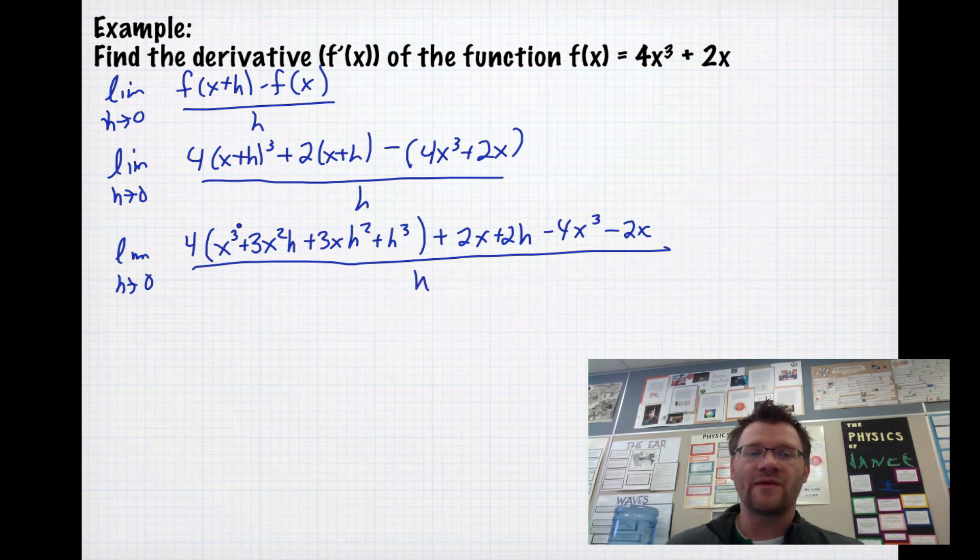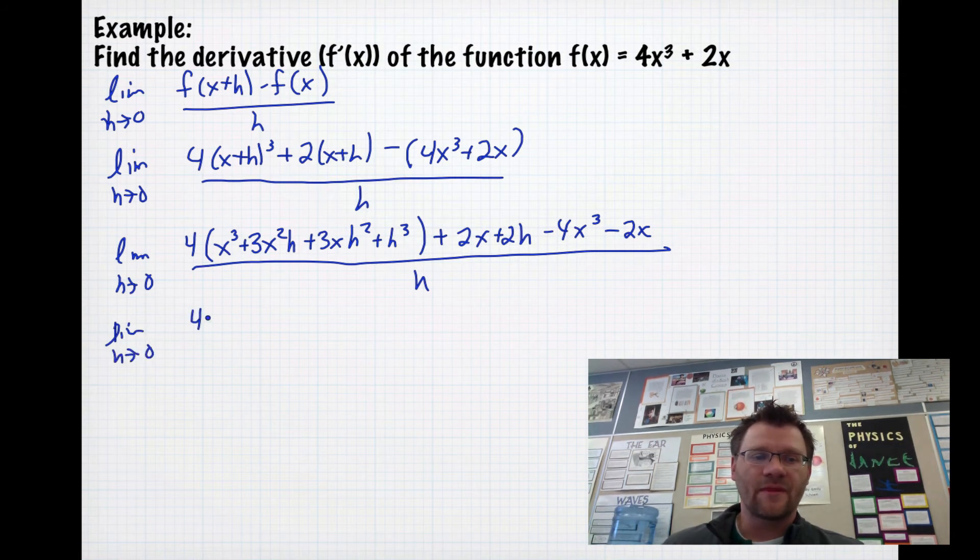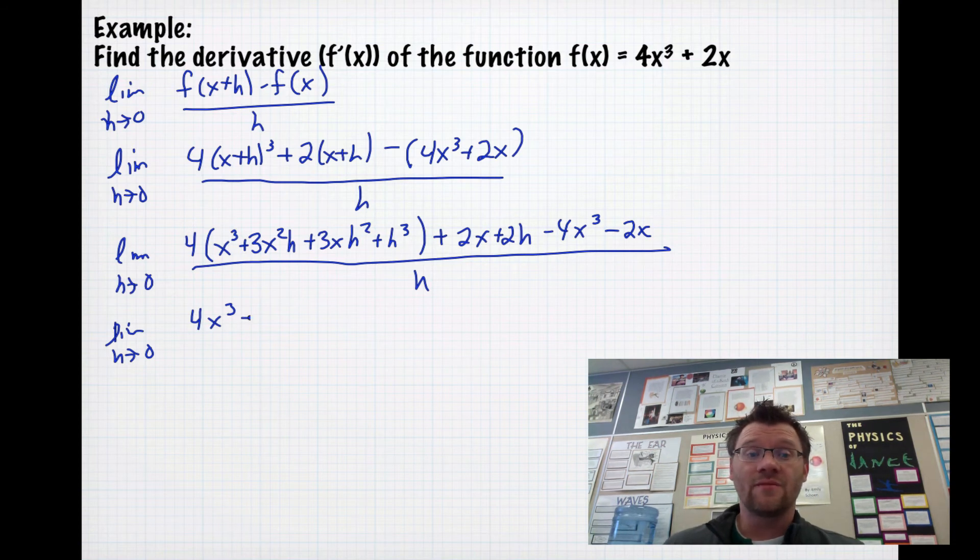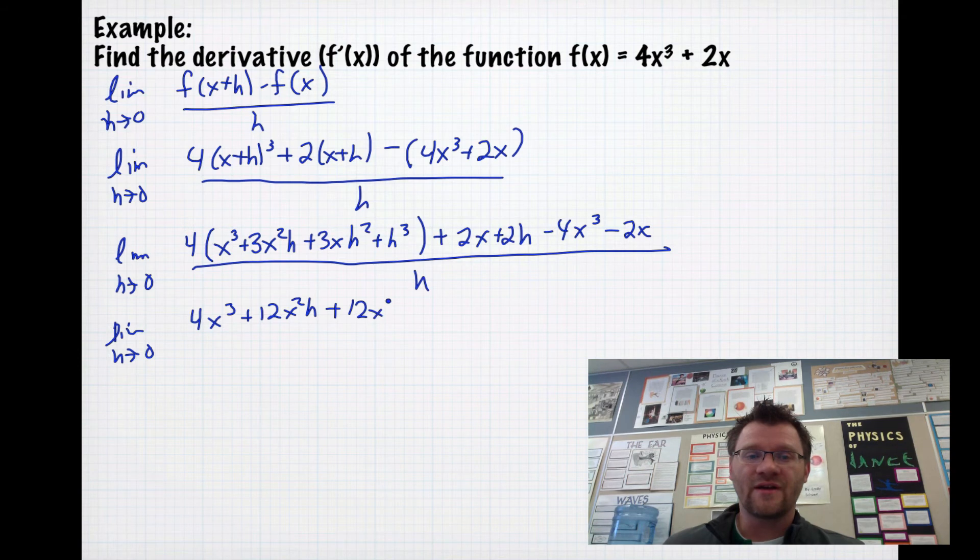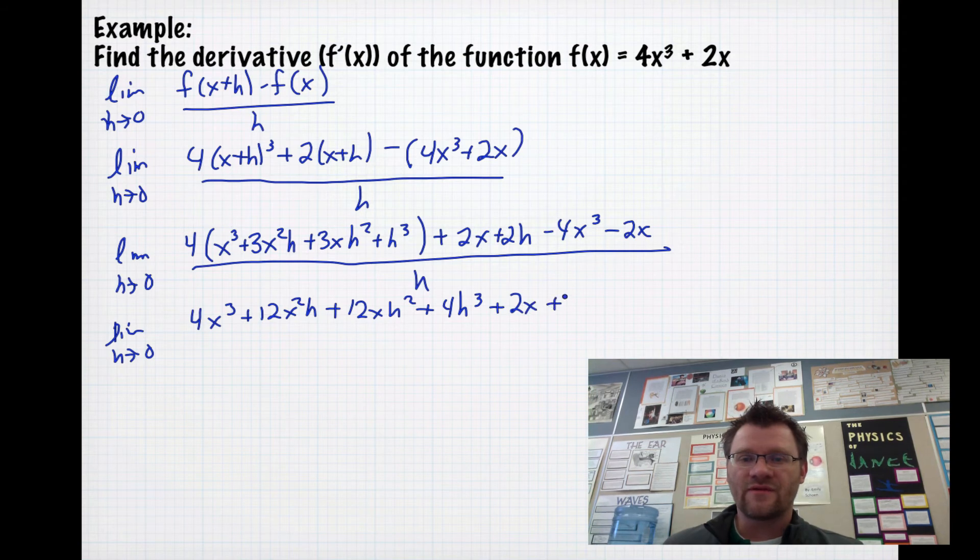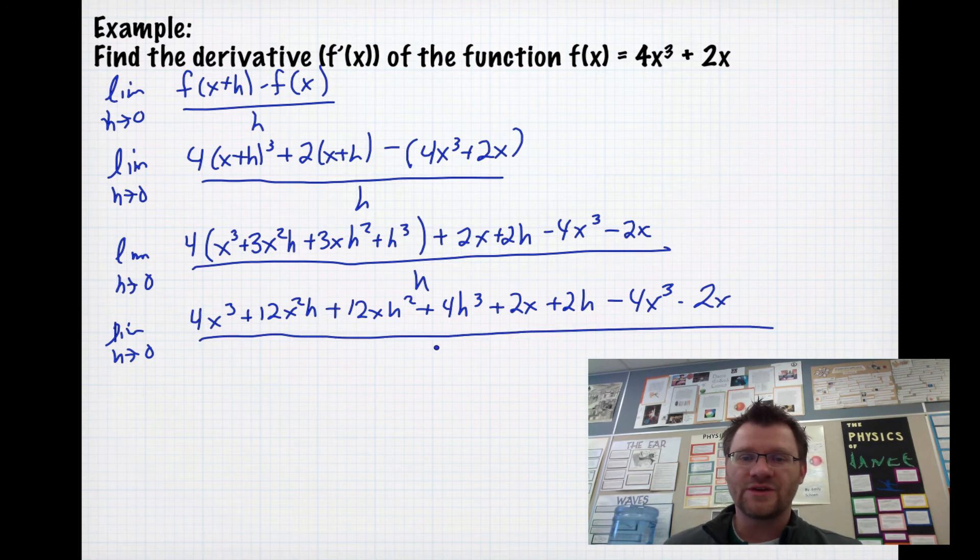That being said, now we need to multiply this 4 in. Then we'll see if there's any terms that can cancel each other out, which there will be. If there isn't, then you've probably done something wrong. So we get 4x³ + 12x²h + 12xh² + 4h³ + 2x + 2h minus 4x³ minus 2x, and that's all over h still.